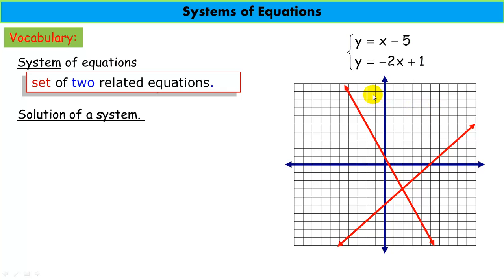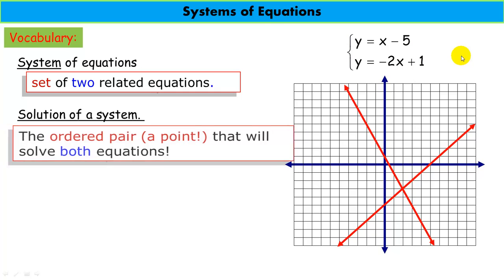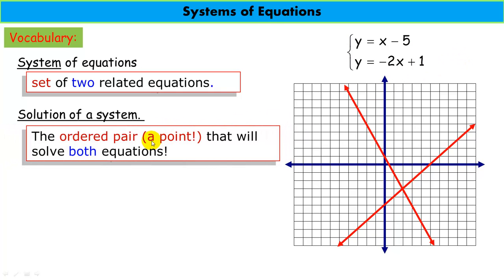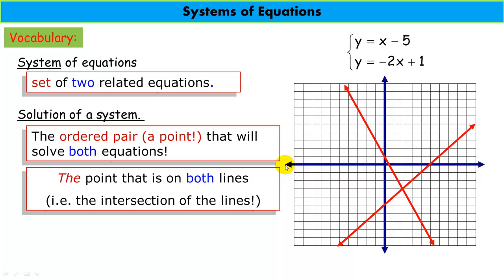When we start talking about solving a system, a solution to a system is an ordered pair — a point — that will solve both equations. Each equation is made up of an infinite amount of points, but there is only one point that is on both of these lines. It is the only point that can solve, or sometimes we say satisfy, both equations. That point is the one on both lines.